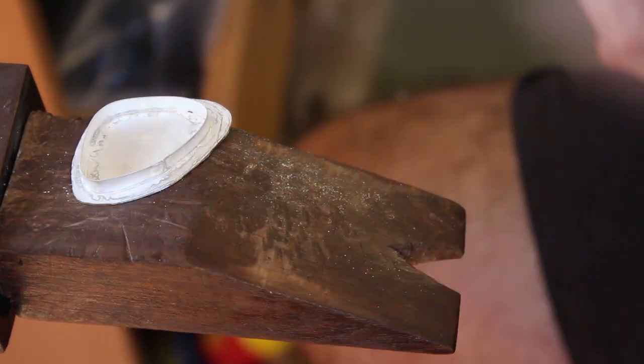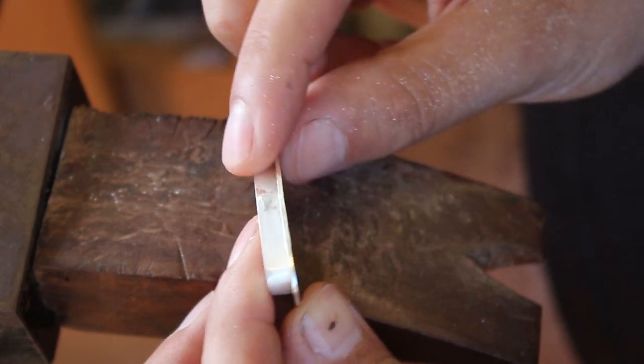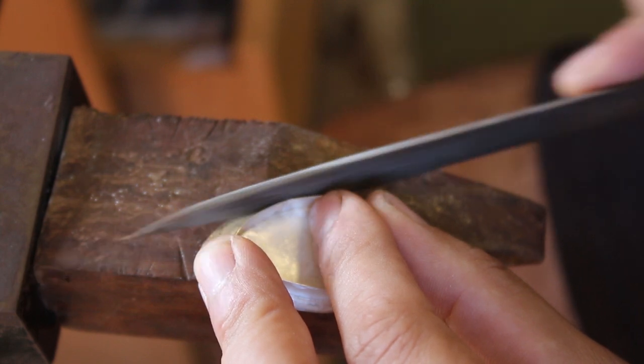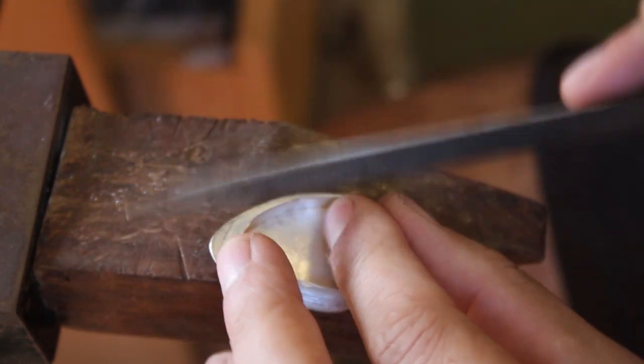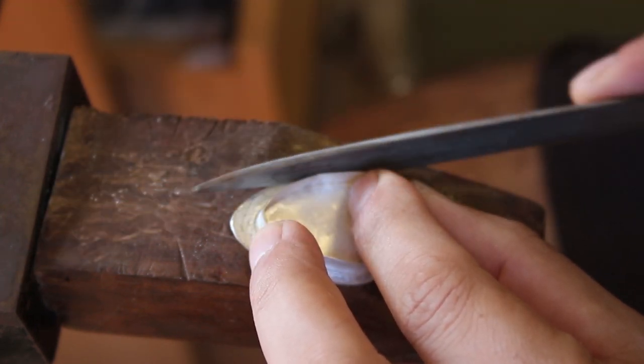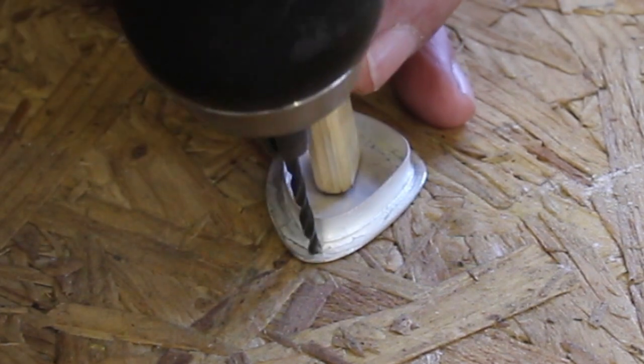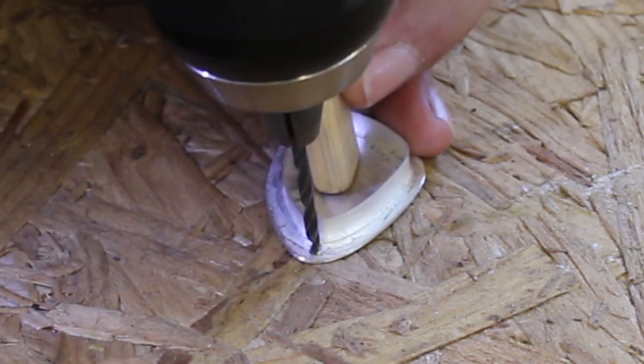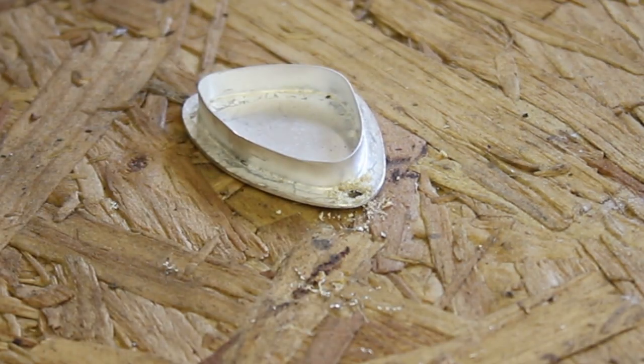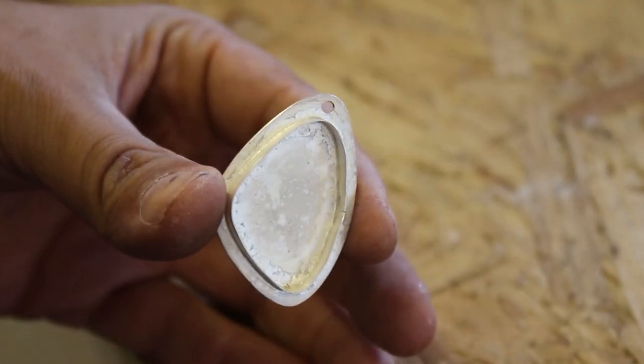The next thing to do was clean up the seam of the bezel wire. So I just took my number four file and just went over that lightly just to make it look a little bit neater. And finally, I drilled a hole in the top of the piece just with a drill and a drill bit. I'm sure you could use a hole punch or something more sophisticated, but I just used a drill.